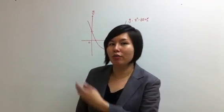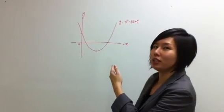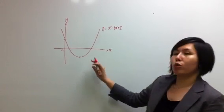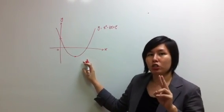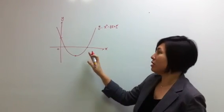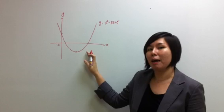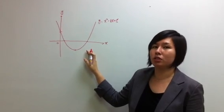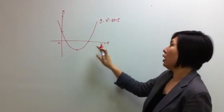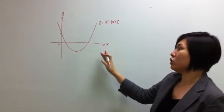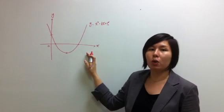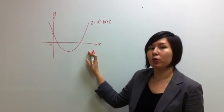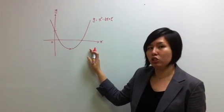Let us first take a look at the graph that I've drawn on board. For a Quadratic Graph, there are basically 2 main shapes. What you see here is what I call the happy face — some of you might call it the U shape. The other shape is what I call the sad face, and some of you call it the N shape.